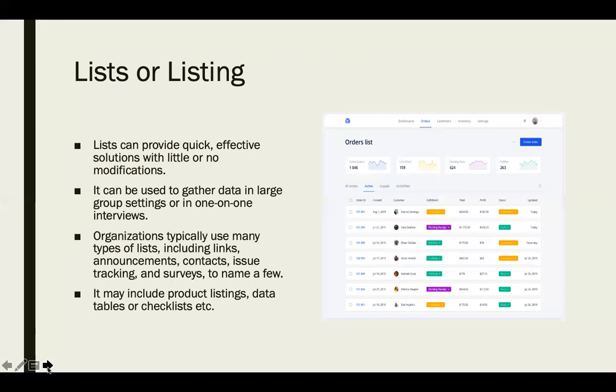The last thing is list or listings. List can provide quick effective solutions with little or no modifications and it can be used to get the data in large group settings or in one-on-one interviews. Organizations typically use many types of lists including links, announcements, contacts, issue tracking, and service to name a few. And lists may also include product listings, data tables, or checklists. And you are all familiar with these types of lists.